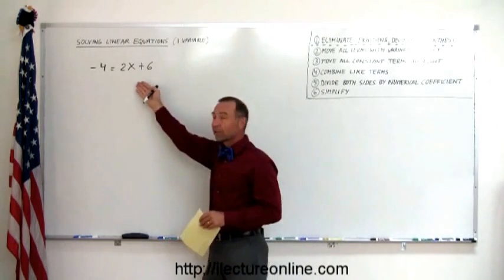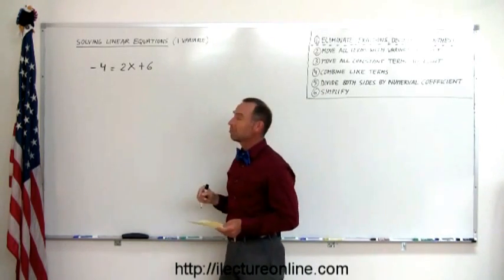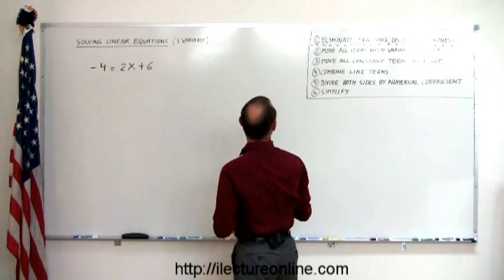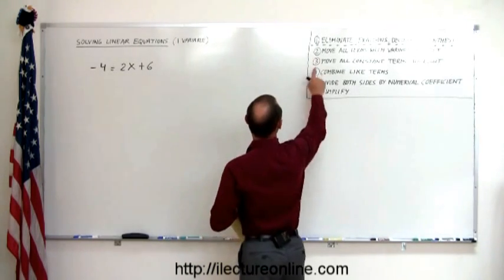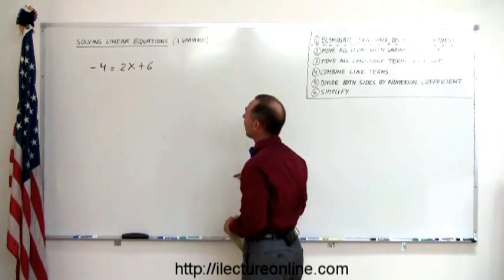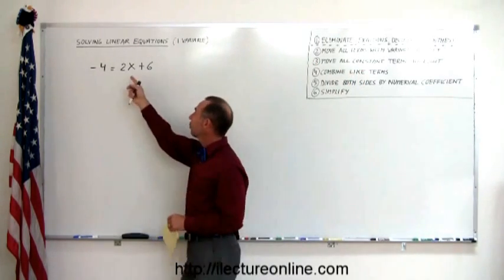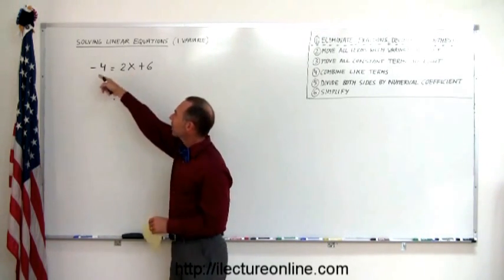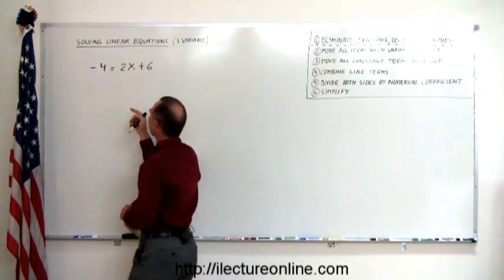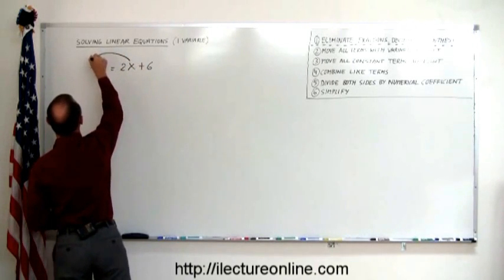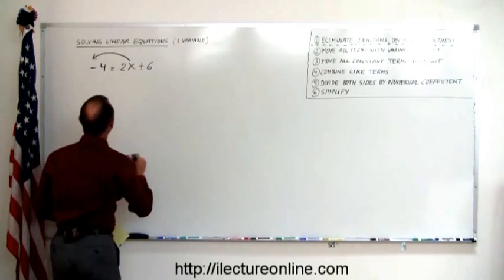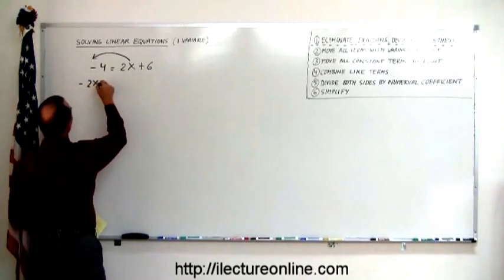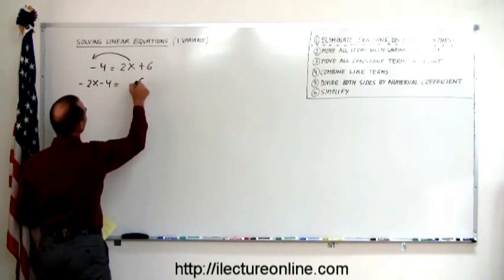First, we ask ourselves: are there any fractions, decimals, or parentheses? The answer is no, because this is a simple example. The next step says move all the terms with the variable to the left. I have a 2x written on the right side of the equal sign, so I move that to the left. When I move that to the left, the sign changes.